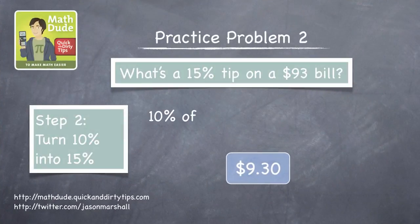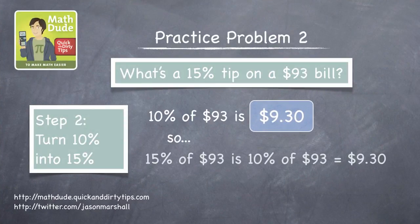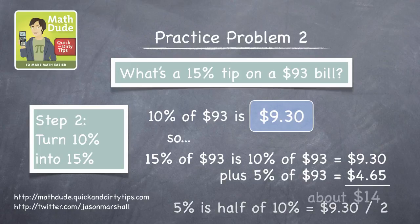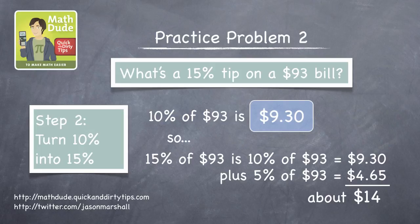Now that we know 10%, we can find 5% by taking half of 10%, which is $4.65. So the total is $13.95, which is pretty close to $14.